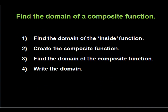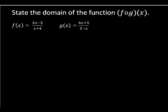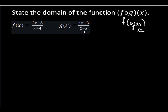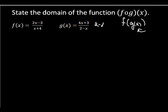Now let's find the domain of a composite function. We'll find the domain of the inside function, create the composite function, find the domain of the composite function, and write the domain. Let's state the domain of f of g of x. The inside function is g of x, so we look at that function first. We need to set the denominator equal to zero: 2 minus x equals 0, so x equals 2. This tells us the domain of g of x is all real numbers except 2.